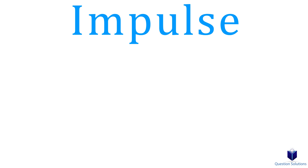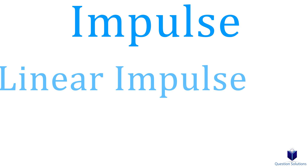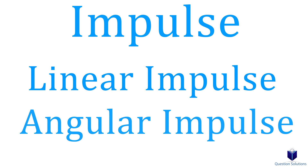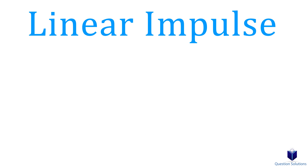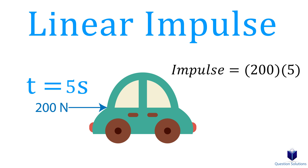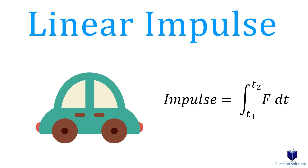Now it's time to talk about impulse. Impulse can also be broken into two parts: linear impulse and angular impulse. Impulse, in simple terms, is how long a force is applied to an object. So if we apply a 200 newton force for 5 seconds, the impulse is 200 newtons times 5 seconds. If the force is not constant, then we integrate it from the initial time to the final time.